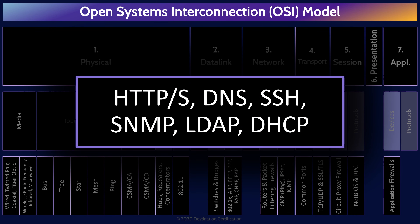Some Layer 7 protocols to know about: HTTP/HTTPS, HyperText Transfer Protocol, provides request-response services to allow a client to request web pages from a web server. DNS, Domain Name System, translates easily remembered domain names like google.com into IP addresses like 172.217.10.14. SSH, Secure Shell, is used for remotely connecting to a system. SNMP, Simple Network Management Protocol, is a protocol for collecting data from and managing the configuration of network devices such as routers and switches. LDAP, Lightweight Directory Access Protocol, is used for accessing and maintaining distributed directory information — for example, a corporate email directory. And DHCP, Dynamic Host Configuration Protocol, assigns IP addresses to devices as they are added to the network, ensuring no duplicate IP addresses.